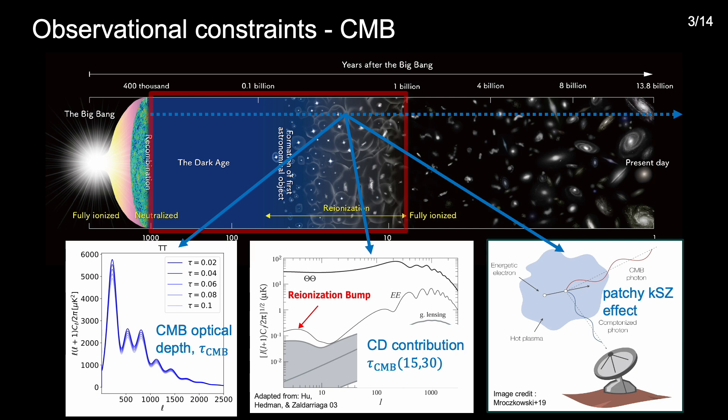And finally the scattering of CMB photons from free electrons in ionization bubbles around sources that have a bulk motion relative to the CMB rest frame imparts secondary fluctuations in the CMB on small scales via the patchy kinetic Sunyaev-Zeldovich effect. The change in the power spectrum resulting from each of these effects is a function of the ionization history of the IGM during reionization and thus one can turn that around and use measurements of these effects in the CMB to constrain the timing of reionization.